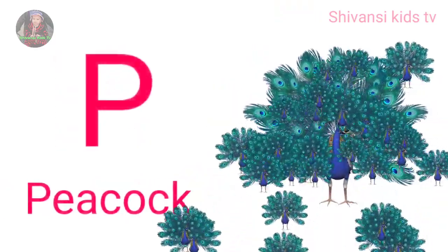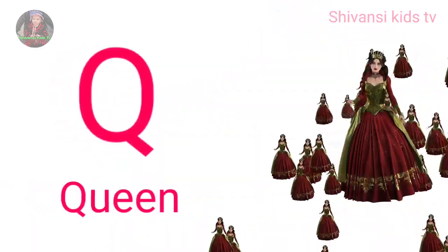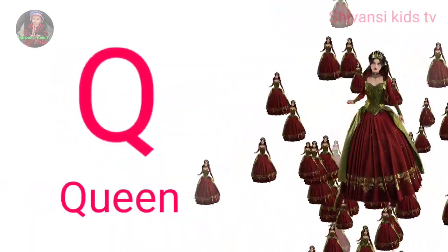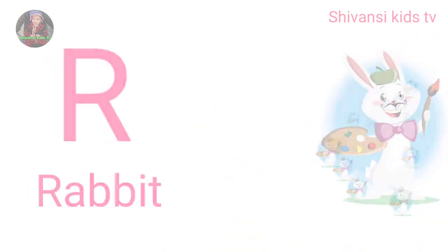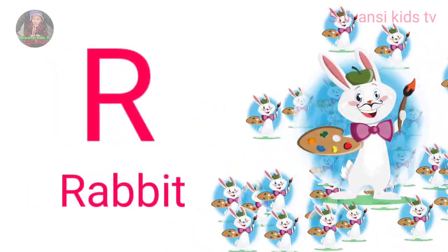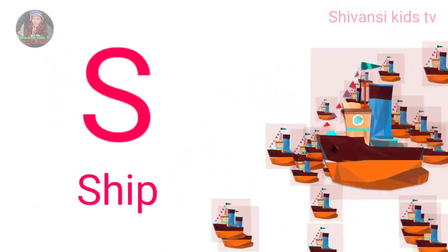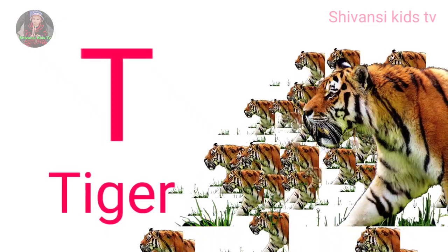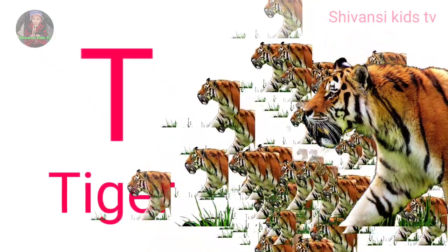P for peacock, Q for queen, R for rabbit, S for sheep, T for tiger.